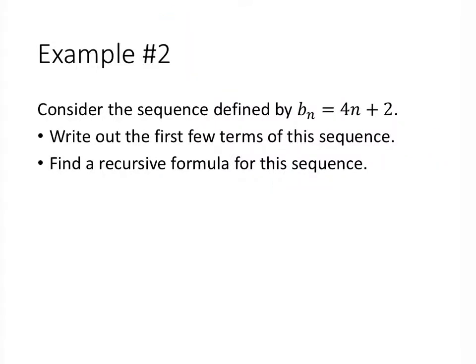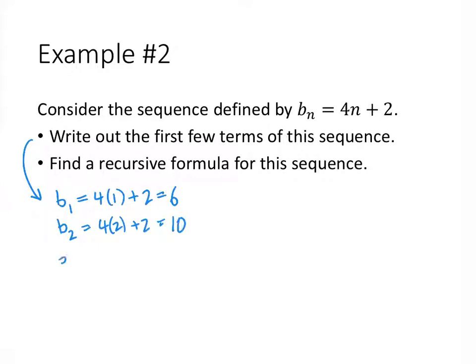Next example: we're given a closed formula, bₙ = 4n + 2, and we're asked to write out the first few terms and find a recursive formula. Let's start by writing out the first few terms. b sub 1 is 4 times 1 plus 2, which is 6. b sub 2 is 4 times 2 plus 2, which is 10. b sub 3 is 4 times 3 plus 2, which is 14. b sub 4 is 4 times 4 plus 2, which is 18. We write out enough terms so that we can see what the pattern is, because eventually we're trying to find a recursive formula.